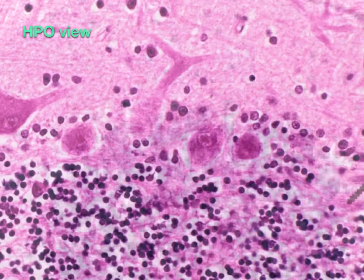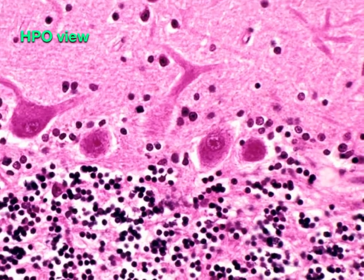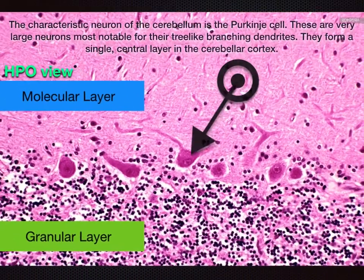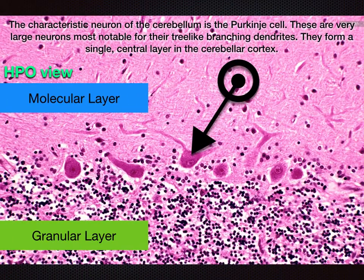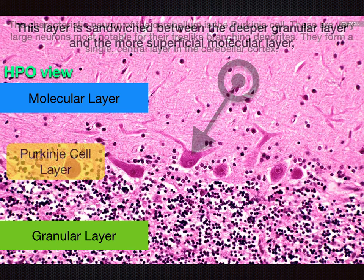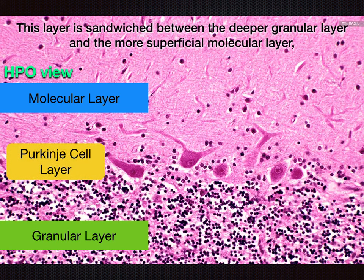Let us now view the Purkinje cell layer at HPO. The characteristic neuron of the cerebellum is the Purkinje cell. These are very large neurons, most notable for their tree-like branching dendrites. They form a single central layer in the cerebellar cortex, sandwiched between the deeper granular layer and the more superficial molecular layer.